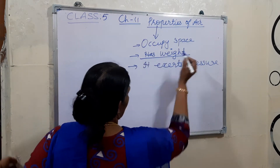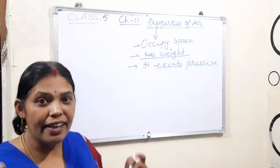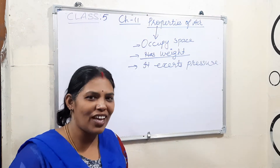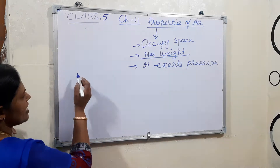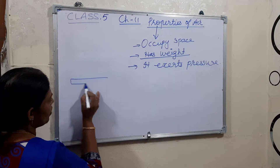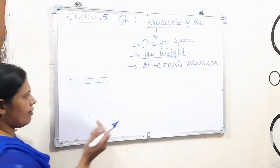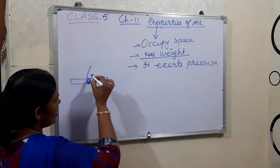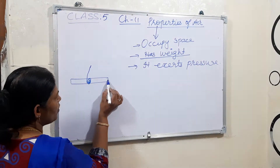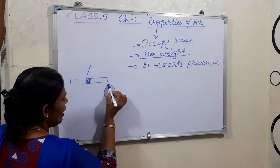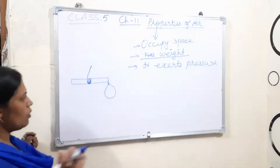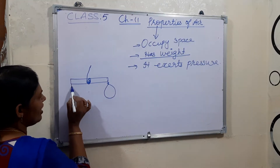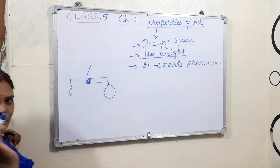Now see how we can come to know that air has weight. Air we can't see - we can only feel it. Then how will we measure the weight of air? See, for example, there is an activity. Take a simple rod or a stick - something you take, or you can take a scale also. Then tie it with a thread. On one end you have to keep a balloon that will be filled with air.